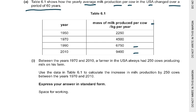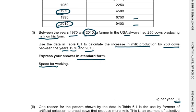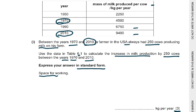Now they want you to do some maths. Between the years 1970 and 2010, a farmer in the USA always had 250 cows producing milk on his farm. Use the data in table 6.1 to calculate the increase in milk production by 250 cows between the years 1970 and 2010. Express your answer in standard form. This is for three marks and you have to give it in kilograms per year.